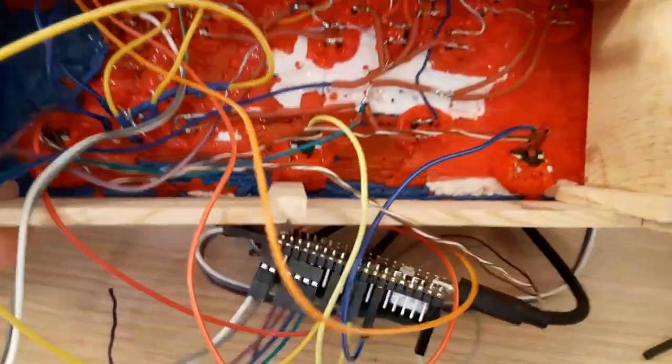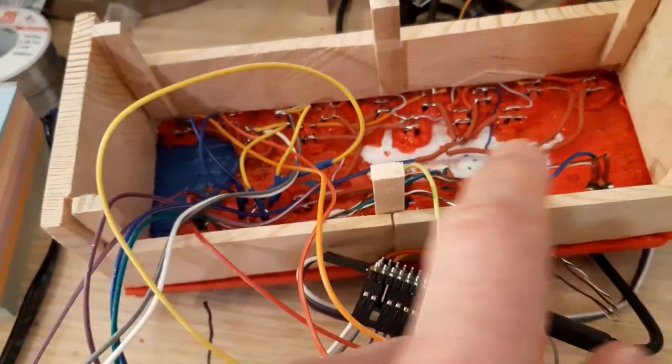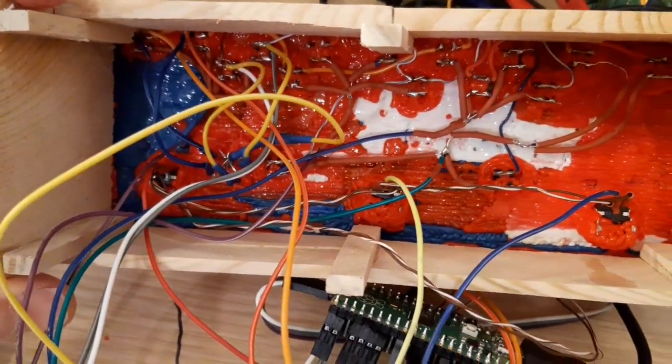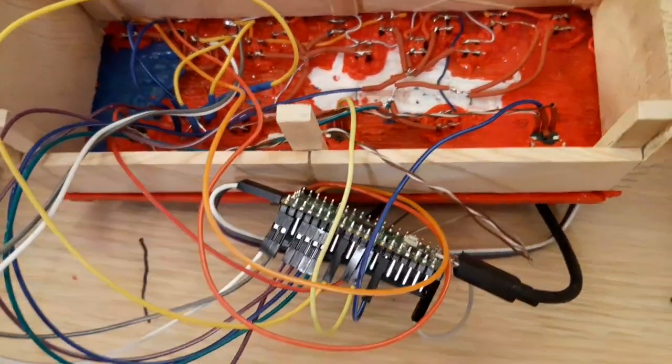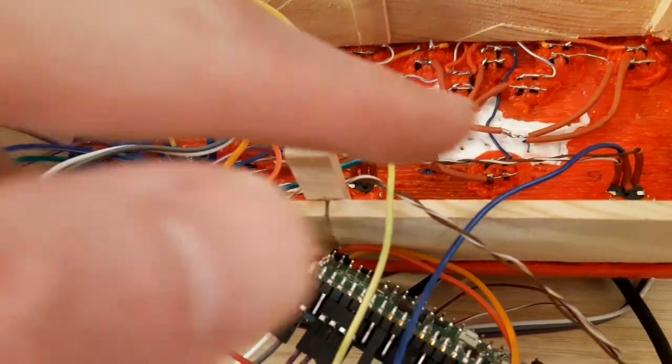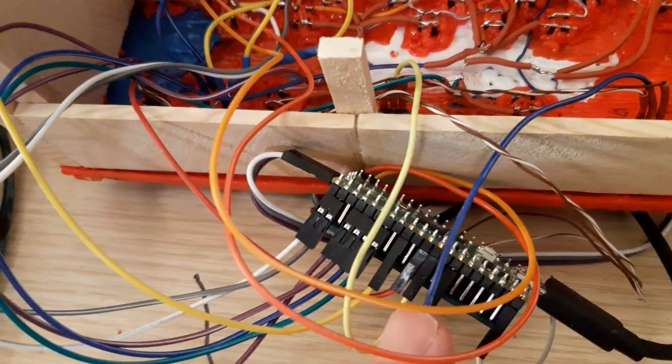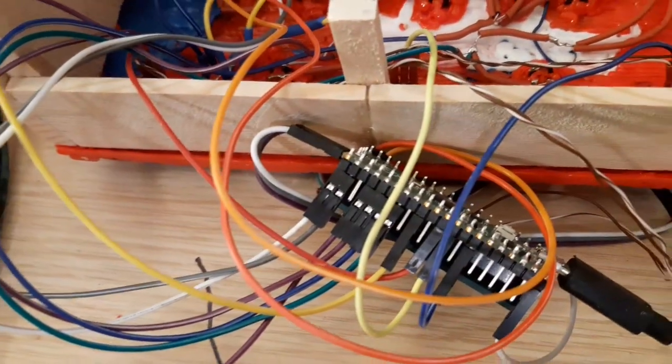This one here runs across to all the three pots just to provide the 0 to 3 volts. So these three wires from the pots, one, two, three, go into the three A to D pins on the Pi Pico.